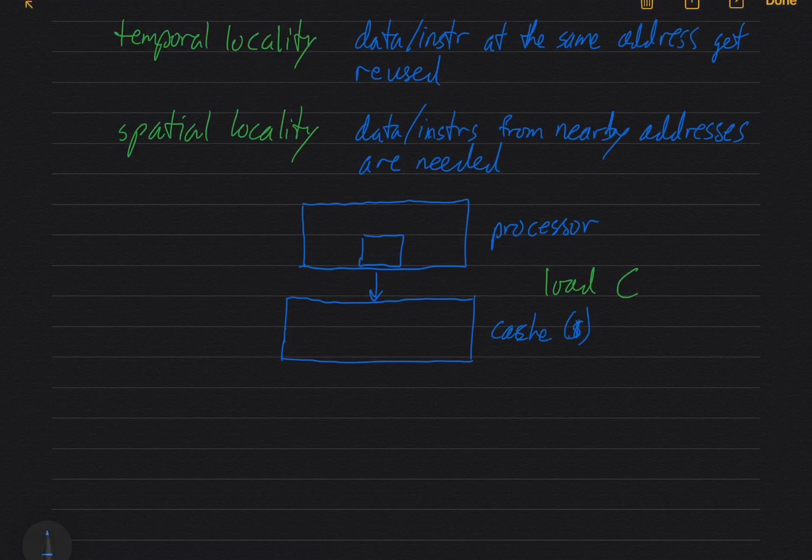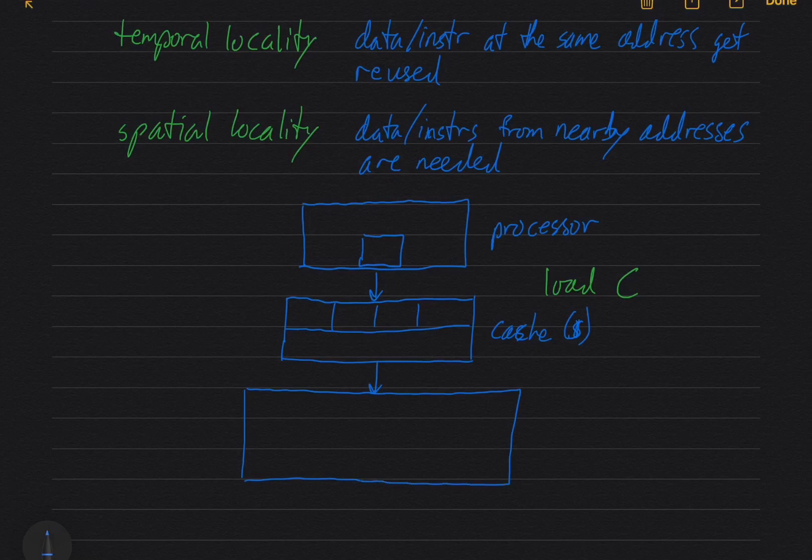And so we're going to look inside the cache and the cache stores not just individual words from the main memory, but it stores what are called cache lines or blocks from memory. So a collection of contiguous bytes from memory. So that might be 64 bytes, 32 bytes, it depends on the cache. So the cache controller is going to check. So I've got one line there, one row of the cache. We're going to check and it's going to say do I have the data from address C? And if it doesn't, then it is going to go down to your main memory.